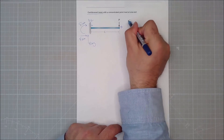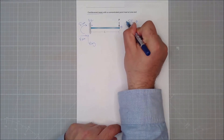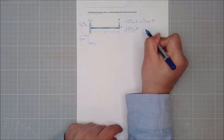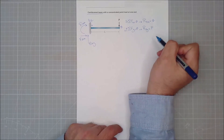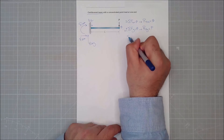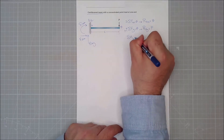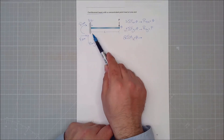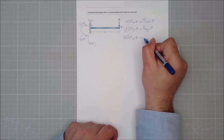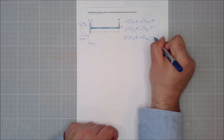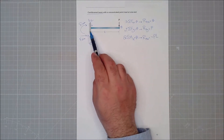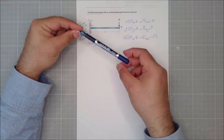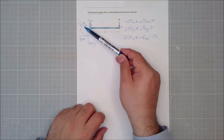Using the equations of equilibrium, I can conclude that RAx is equal to zero, and RAy is equal to P. Taking moments about point A, where the majority of unknowns are, and considering clockwise as positive, RAM equals negative PL. This makes sense because the force P is pushing the beam downward, so the reaction moment must act in the opposite direction.